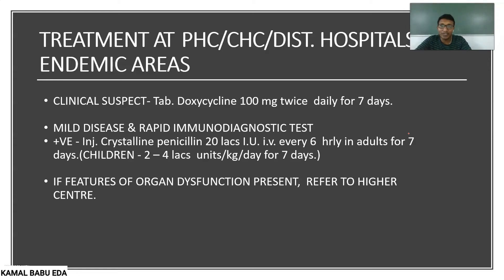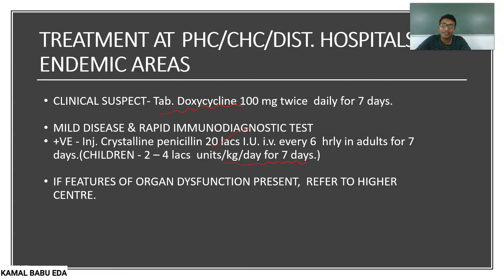Treatment of leptospirosis is managed at three levels: PHC, CHC, and tertiary level. At PHC/CHC/district hospitals in endemic areas, clinical suspects are given tablet doxycycline 100 mg twice daily for seven days for mild disease. If rapid immunodiagnostic test is positive, crystalline penicillin is given — 20 lakh international units every six hours for adults, or 2 to 4 lakh units per kg body weight for children for seven days. If features of organ dysfunction are present, the patient is referred to a higher center.